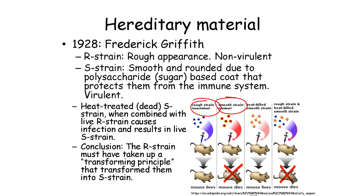The smooth strain has a sugar-based coat that provides protection from the mouse's immune system. Heat treating the smooth strain bacteria would kill the bacteria, and the dead bacteria would no longer be infectious or virulent, so the mouse would live.